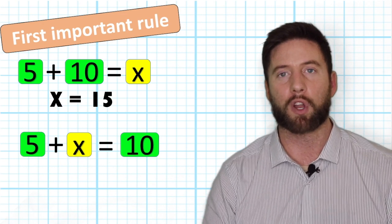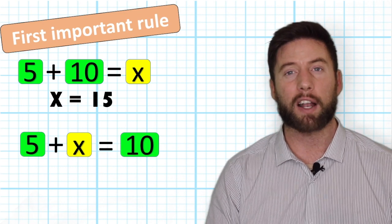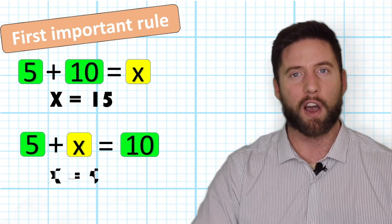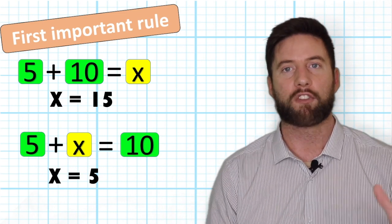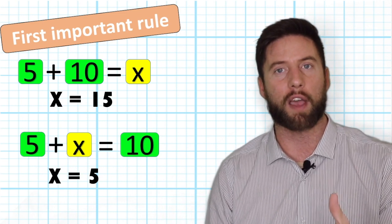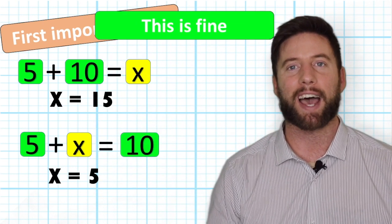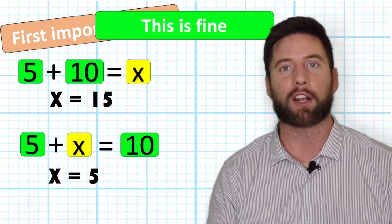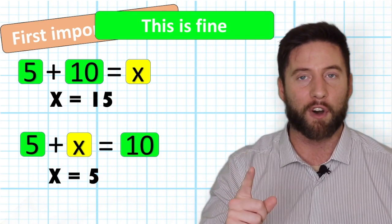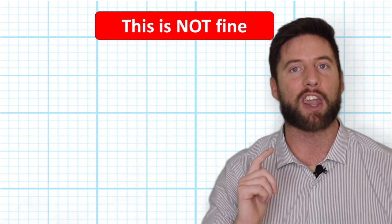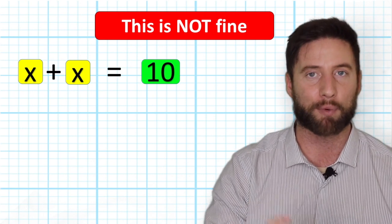For example, if someone asked us to solve 5 + X = 10, the value of X in this case is 5, because 5 would have to add to another 5 to equal 10. So X or any other symbol can stand for different unknown values in different problems. That's fine.